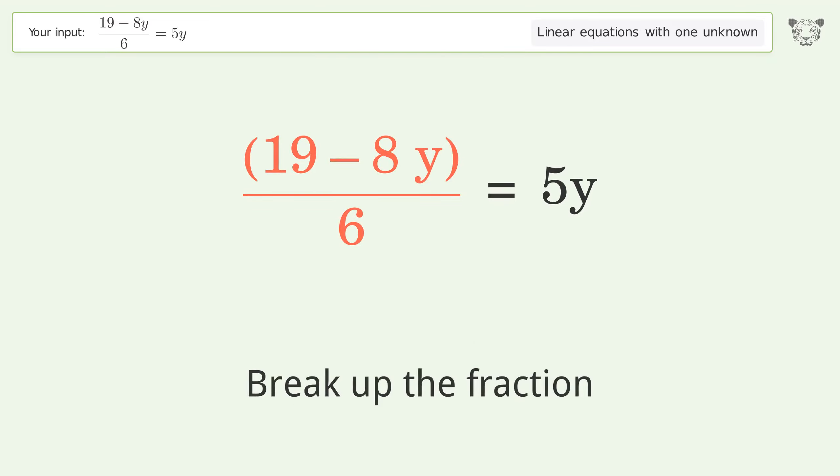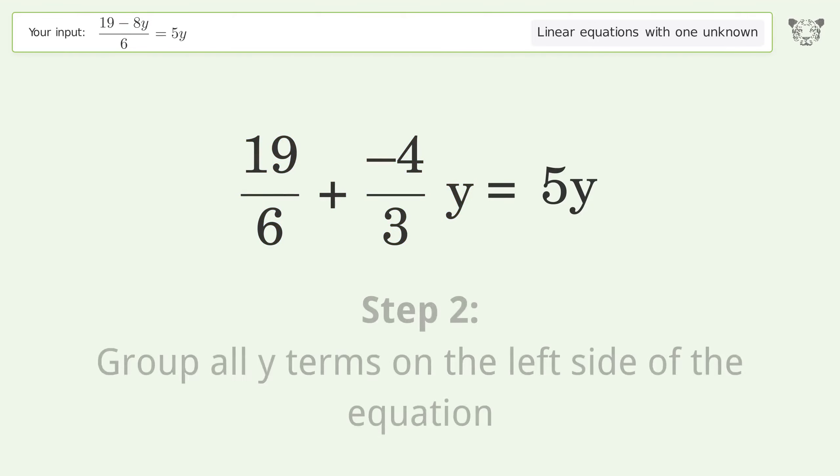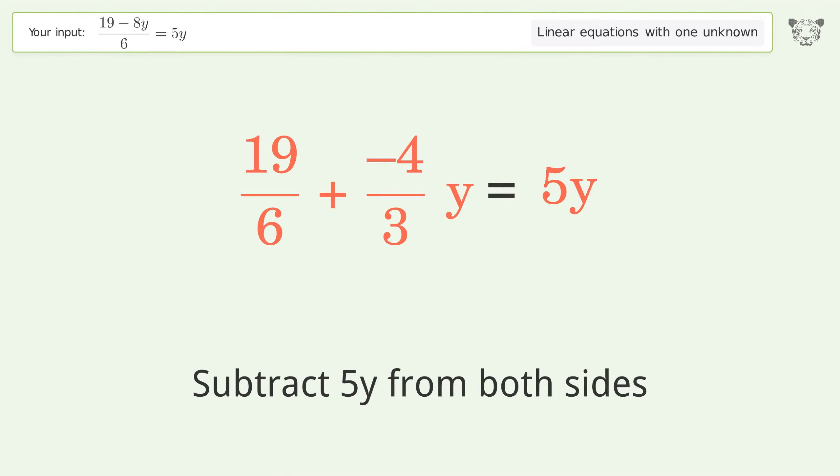Break up the fraction. Simplify the fraction. Group all y terms on the left side of the equation. Subtract 5y from both sides.